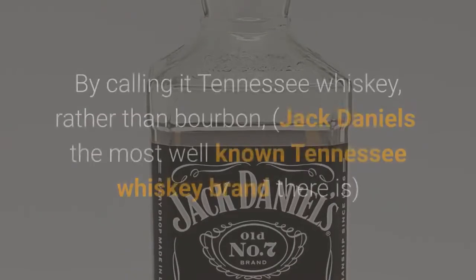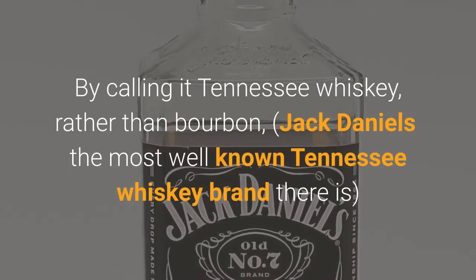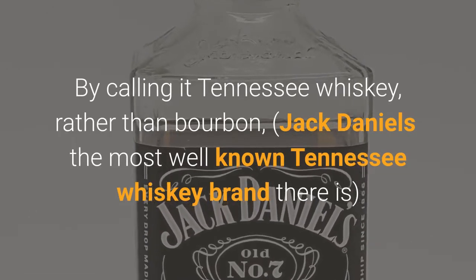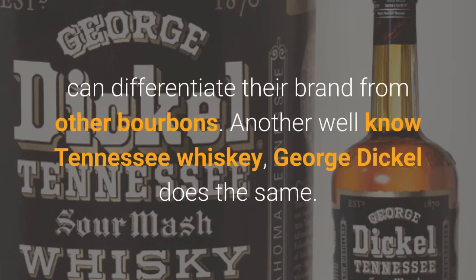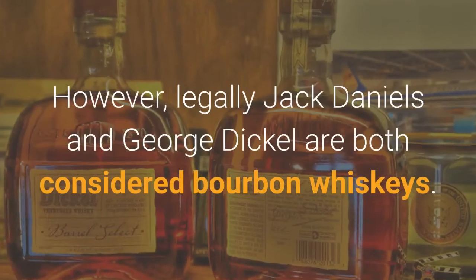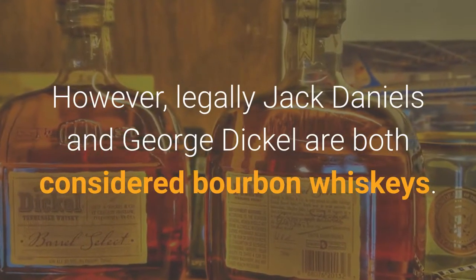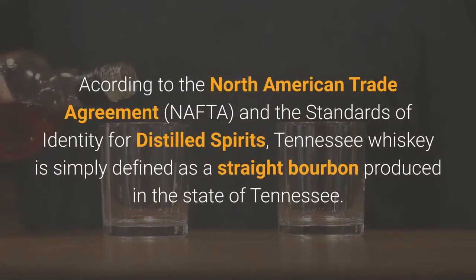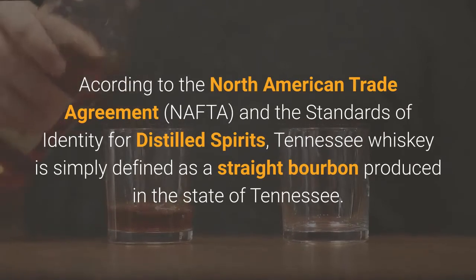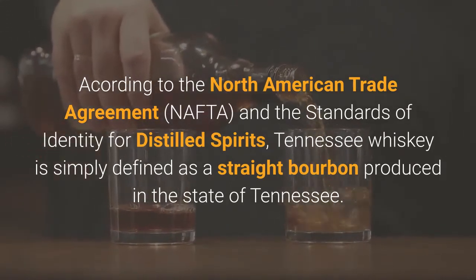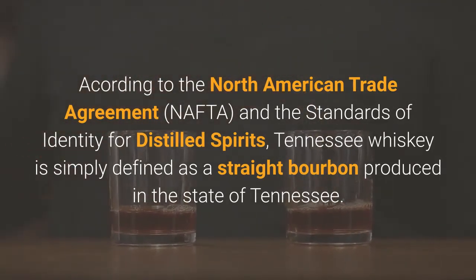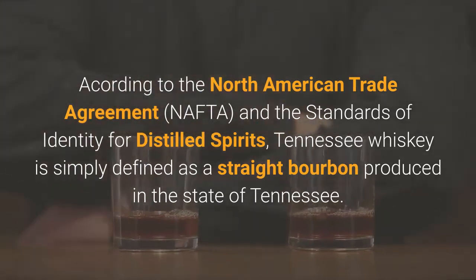By calling it Tennessee Whisky rather than bourbon, Jack Daniel's — the most well-known Tennessee Whisky brand — can differentiate itself from other bourbons. Another well-known Tennessee Whisky, George Dickel, does the same. However, legally Jack Daniel's and George Dickel are both considered bourbon whiskies. According to the North American Trade Agreement and the Standards of Identity for Distilled Spirits, Tennessee Whisky is simply defined as a straight bourbon produced in the state of Tennessee.